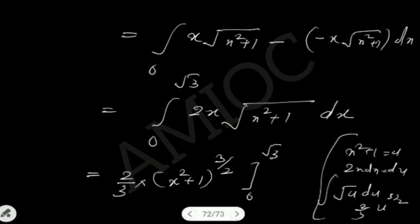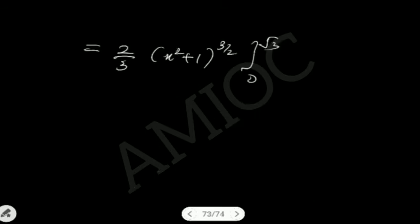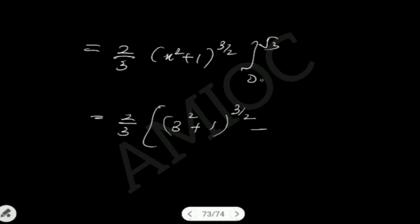So the final integral result is 2/3 times (x squared plus 1) to the power 3/2, with the limit varying from 0 to root 3. In the next step, we apply the upper and lower limits. Substituting x equals root 3: root 3 squared is 3, so we get 2/3 times (3 plus 1) to the power 3/2.